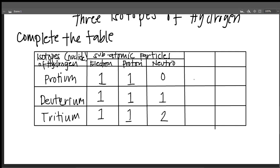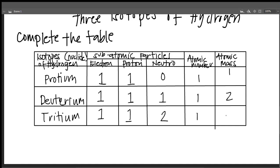The atomic number for all three is one, one, one. And the mass numbers are one, two, and three respectively.